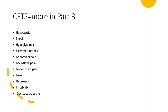I will briefly go over some clinical features here, but you're going to get full details of symptoms and signs in part 3 of this series. When it comes to Addison's Disease, there will be low blood pressure — that is hypotension — shock, hypoglycemia, extreme tiredness, abdominal pain, back pain and flank pain, lower chest pain, fever, depression, irritability, and decreased appetite.